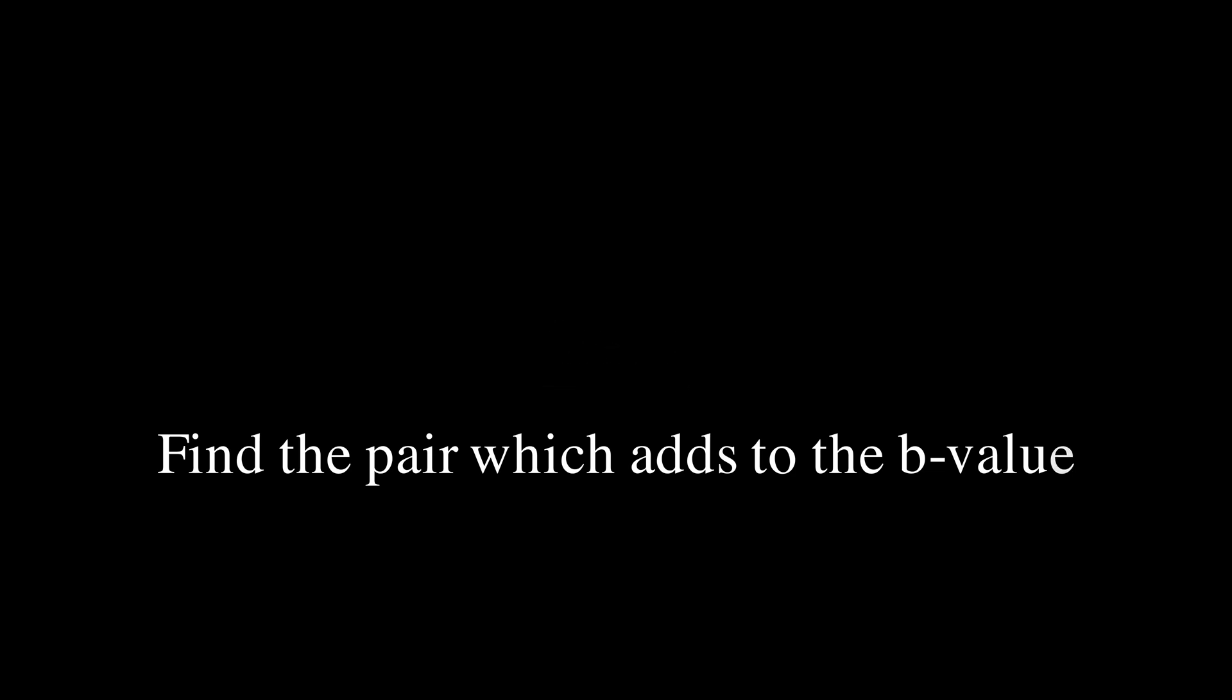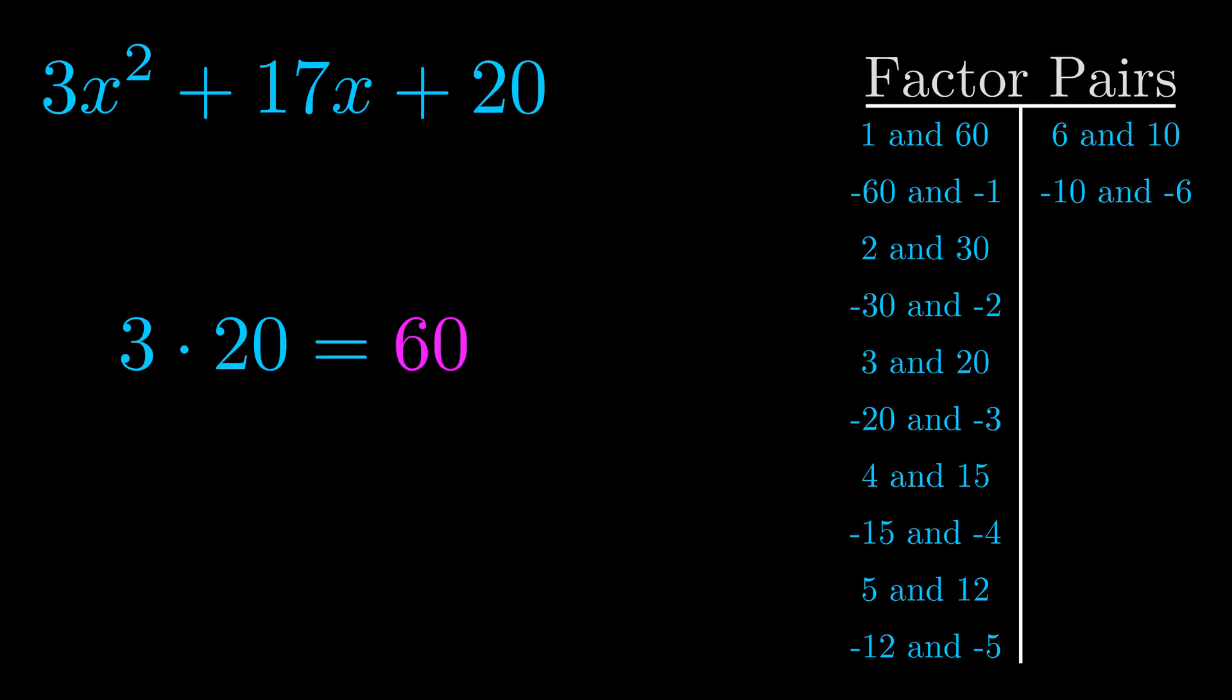The b value is the coefficient on the x term. That's the middle term, the one that we haven't done anything with yet. And really this is the only factor pair that we need.